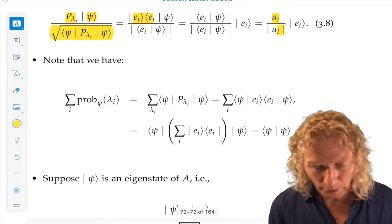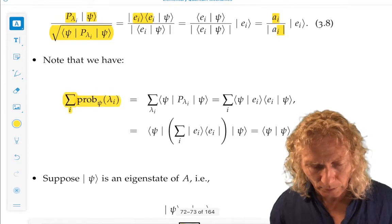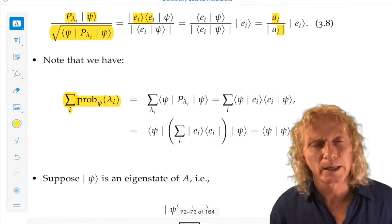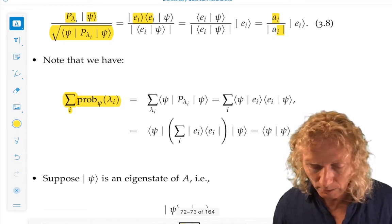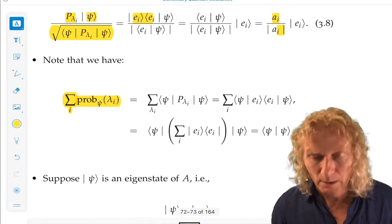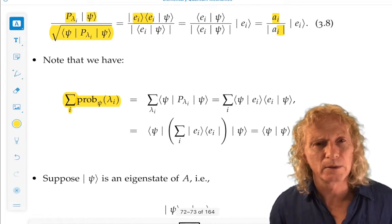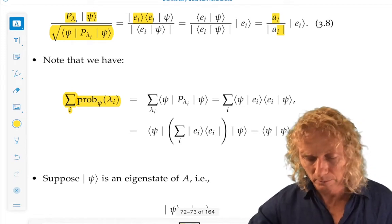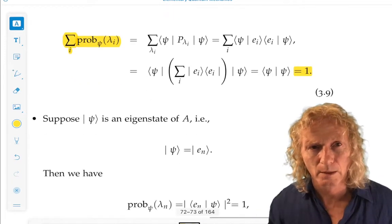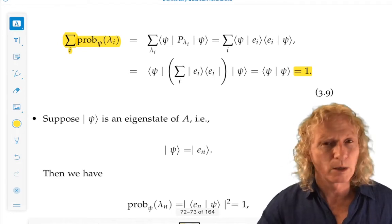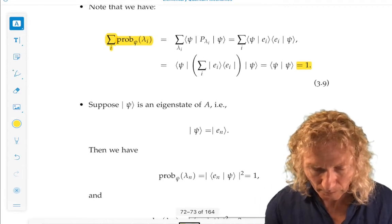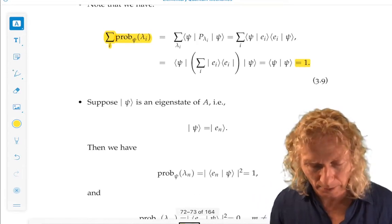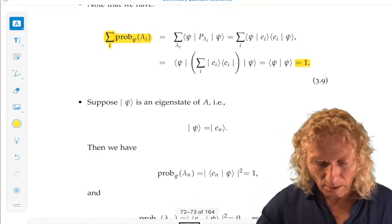Look at this expression here. If we look at the probability for measuring lambda_i in the state and sum over i, we get 1. So, that means the sum of the probabilities is 1, which is what we would expect. We're going to measure something. And normalization came into play there.